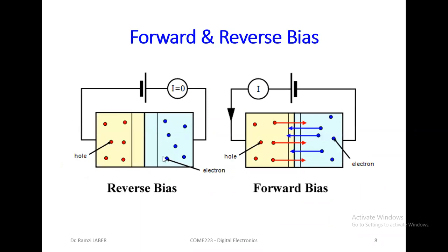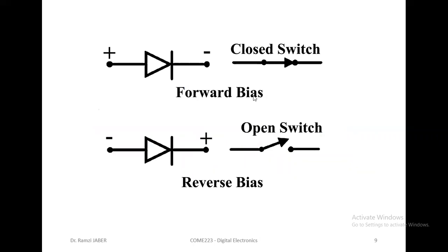When we reverse it — reverse bias — nothing happens. It creates an open circuit, because negative with plus creates attraction: the protons move away from the junction toward the back, and electrons similarly attract toward the positive terminal. They move away from the depletion region, widening it. This is reverse bias. So the diode works as forward bias: plus to plus — closed switch ON. Reverse bias: negative on plus — open circuit OFF.